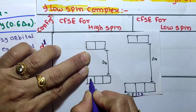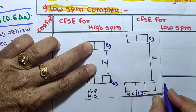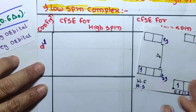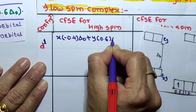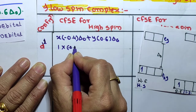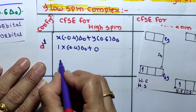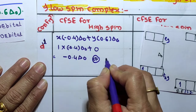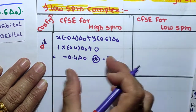For the d1 configuration in both high spin and low spin complex, the single electron enters the t2g level first. The configuration is t2g = 1, eg = 0. Using the formula: 1 × (−0.4 ΔO) + 0 × (0.6 ΔO) = −0.4 ΔO, which is the same as −2/5 ΔO. This energy is the same for both high spin and low spin.